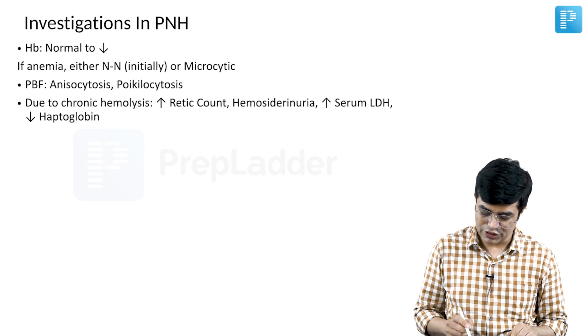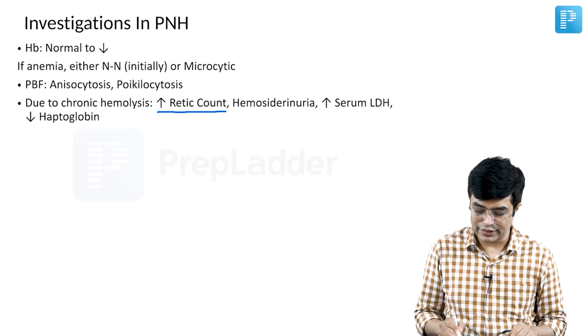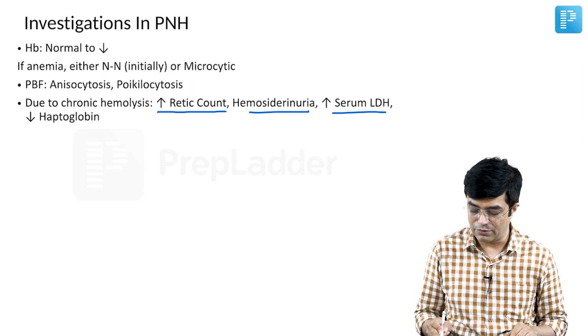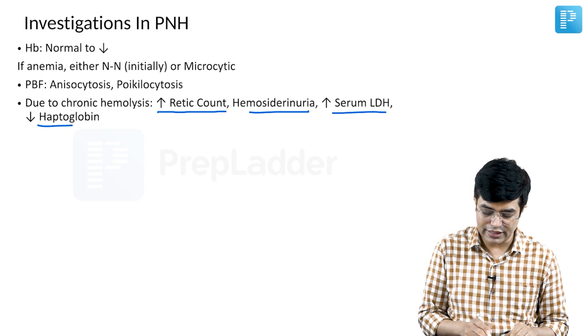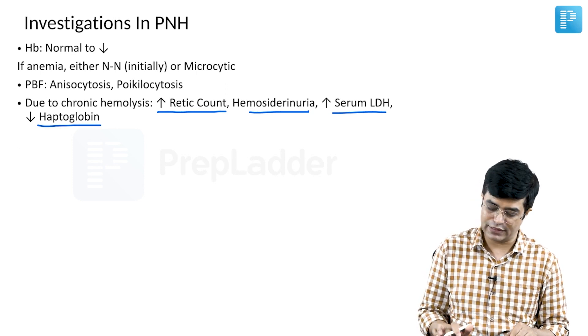Due to chronic hemolysis, these patients will have reticulocytosis; they can have hemoglobinuria. There will be raised LDH and decreased plasma haptoglobin levels.